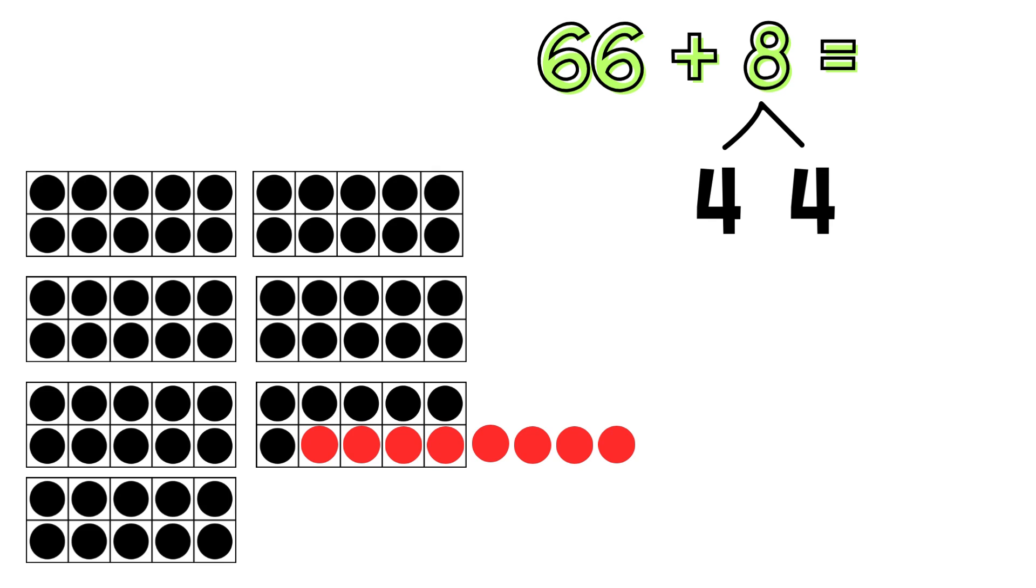Now I can write a new equation. I have 7 full 10 frames, which makes 70. And I have 4 left over. So I'll add that to 70. 70 plus 4 equals 74. So 66 plus 8 equals 74.